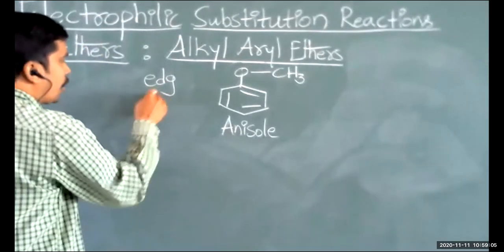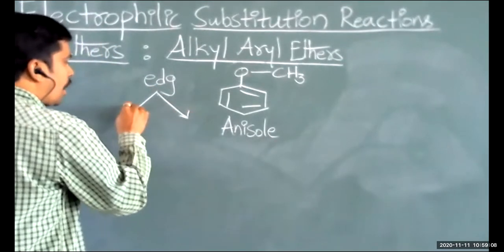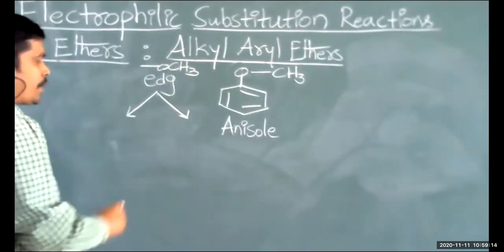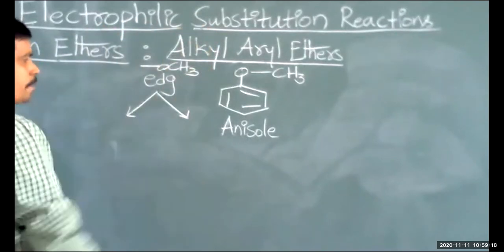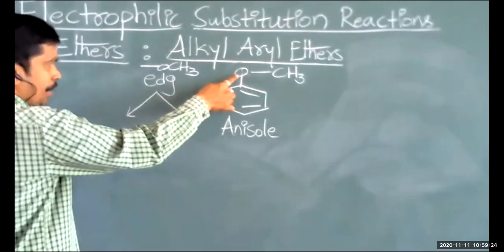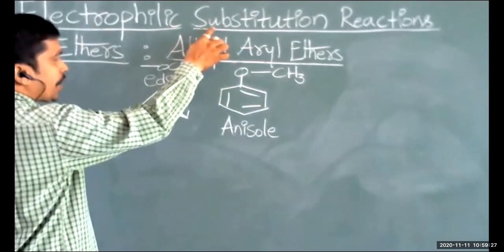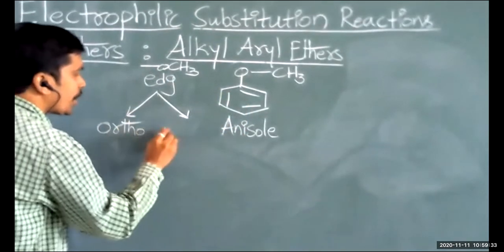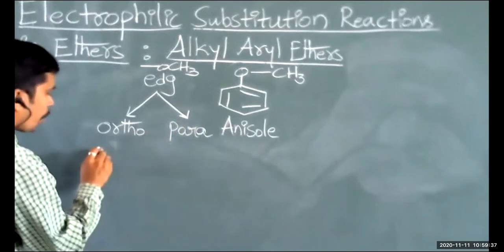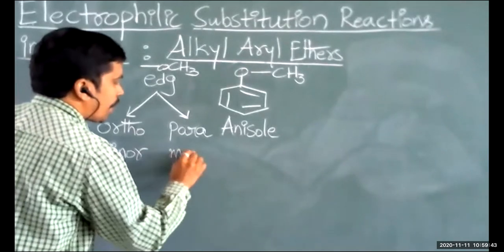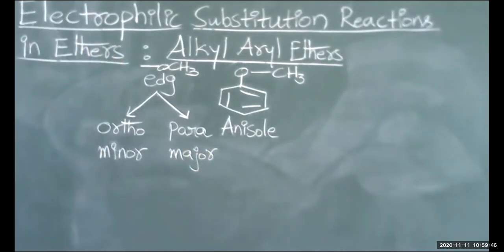Whenever an electron-donating group is present on the benzene ring, electrophilic substitution reactions take place at the ortho and para positions. Ortho products are minor products, whereas para products are the major products. We are going to discuss three reactions in this context.